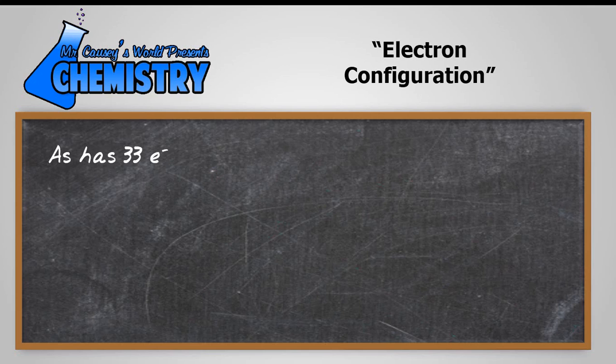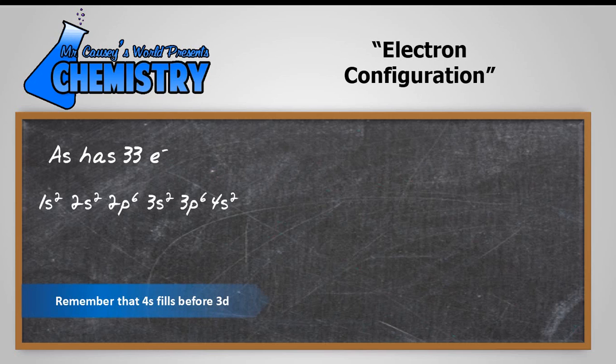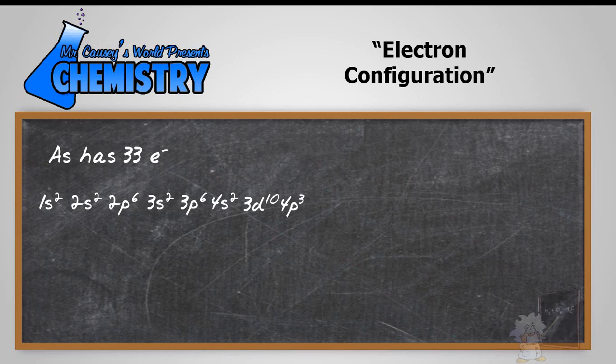Arsenic has 33 electrons so we're going to put 1s2, 2s2, 2p6, 3s2, 3p6 and 4s2. Remember the 4s is filled before the 3d. Then 3d10 and then 4p3, and that's the electron configuration. But let's look at the orbital notation.